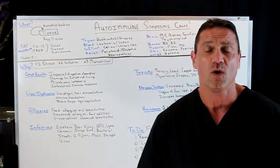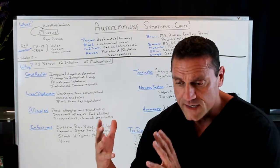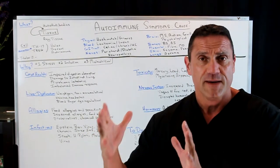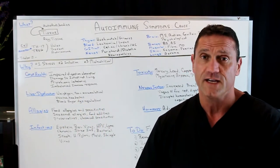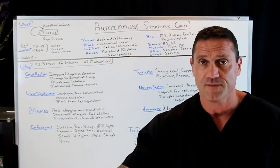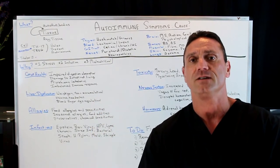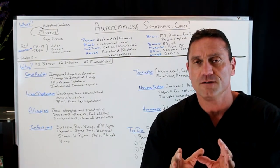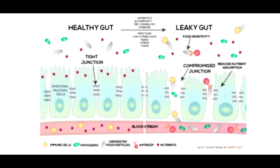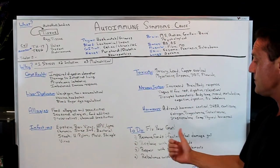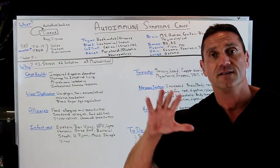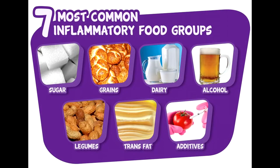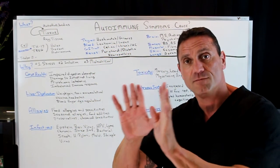So when you have all this stuff going on, what do you do? What is the to-do list? If you go to your primary doc, they're going to give you corticosteroids — some type of steroid which helps calm down the inflammation, but it's not going to help the cause. Since most of your immune system is in your gut, the key thing is to watch what you're putting in your gut. Let's clean up your gut. You want to remove foods and factors that damage the gut — stay away from the processed foods, sugars, wheat, gluten, soy, dairy, and peanuts.